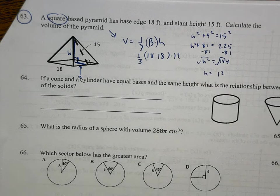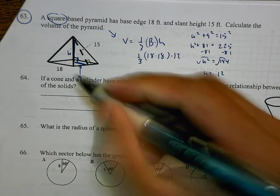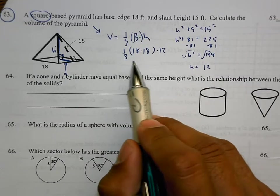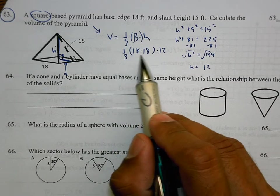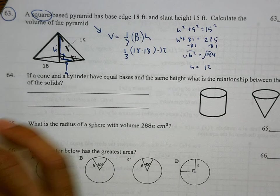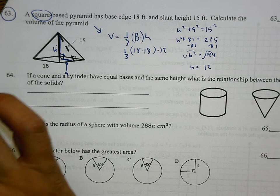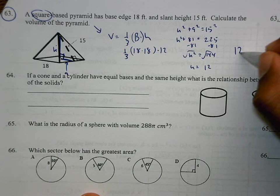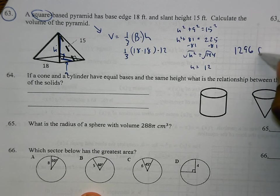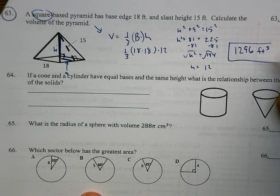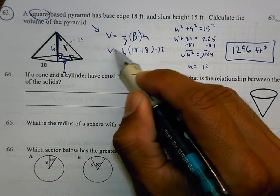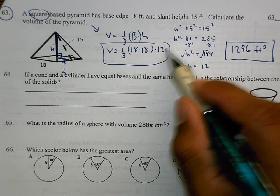So for the height we have to use the perpendicular height. We're not going to fall for the trap when they give us a slant height. And so what we'll plug into our calculators is one-third times 18 times 18 times 12. And you can double check me on this, but I'm getting 1296 cubic feet for my volume.